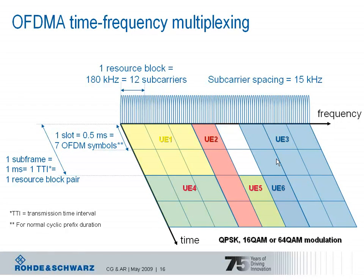This picture illustrates OFDMA time-frequency multiplexing of several users. The available bandwidth is organized in resource blocks of each 180 kHz, which is 12 subcarriers. One UE can be assigned either one resource block — an example of this would be UE2 — or multiple resource blocks, like UE1 which has been assigned three resource blocks to transmit on.